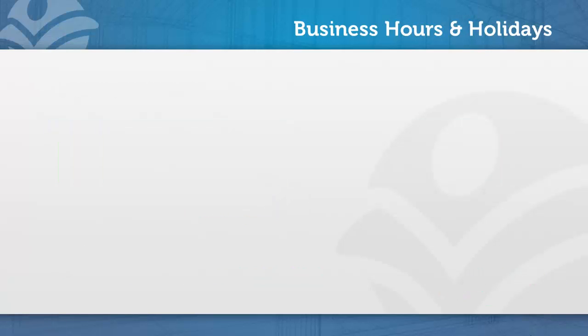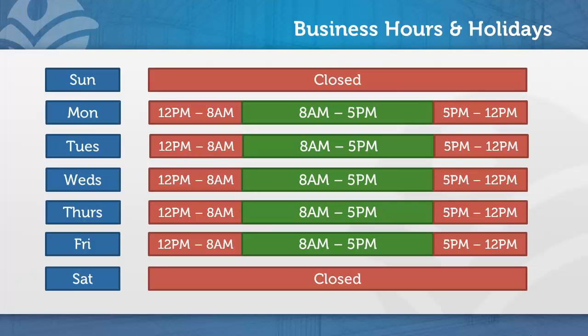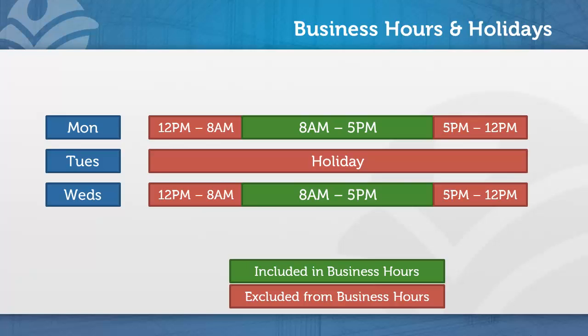Business hours and holidays are combined to form hours of operations. Business hours essentially say your department or company is open Monday through Friday, 8 a.m. to 5 p.m. Eastern Standard Time. That's what a business hours setting sets the framework for — your hours of operations.